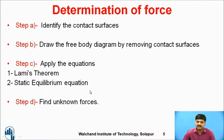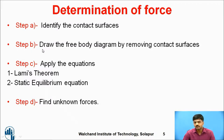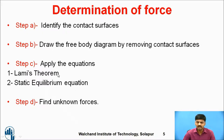We use the same sign conventions and steps to identify the forces. Step A: identify the contact surfaces. Step B: draw the free body diagram by removing the contact surfaces. Step C: apply the equations — either Lami's theorem, where three forces are proportional with respect to the sine of the included angles, or the static equilibrium equation.